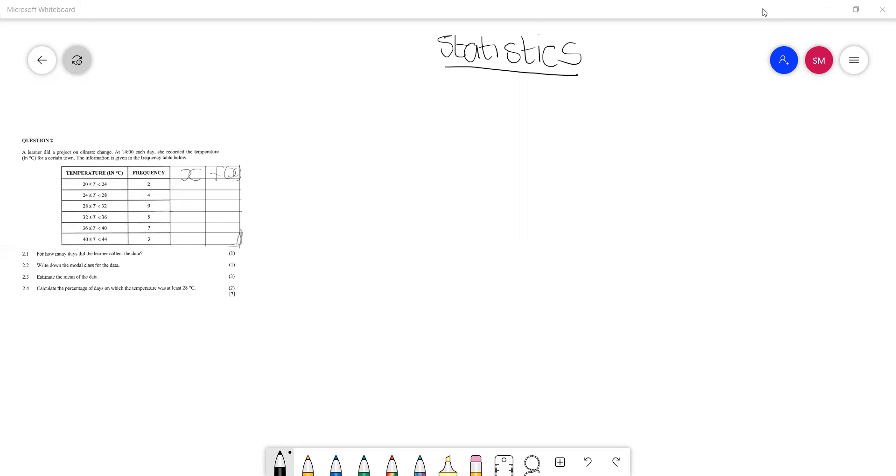So what we are required to do is to calculate or to determine for how many days did the learner collect the data. So that is 2.1. So 2.1, how many days? Since this information was recorded on a daily basis, we are required to add each of these numbers. And this would give us 30 days.